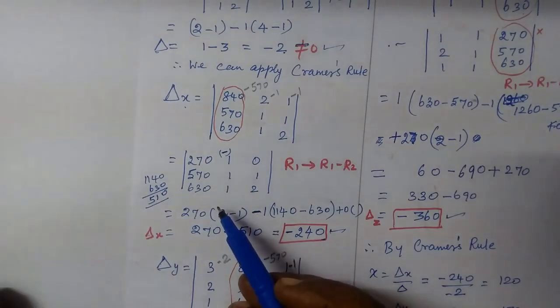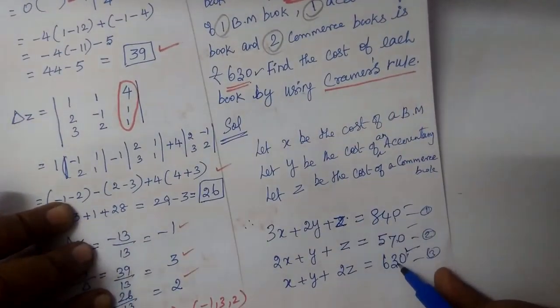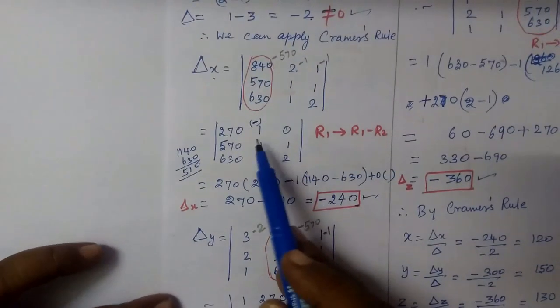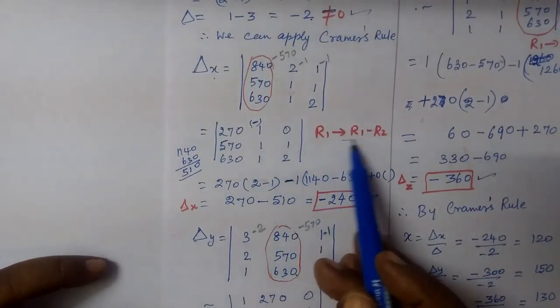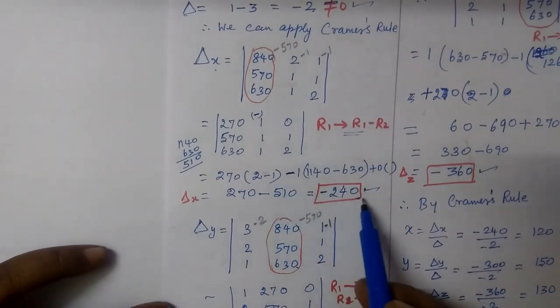At del x, in the first row the constant is 840, 570, 630. Then substitute x values in place. Then as usual, the method is to directly use the determinant method to get the answer.